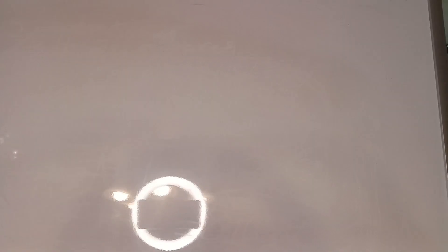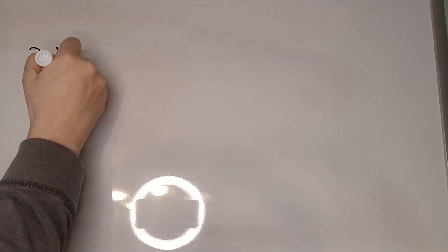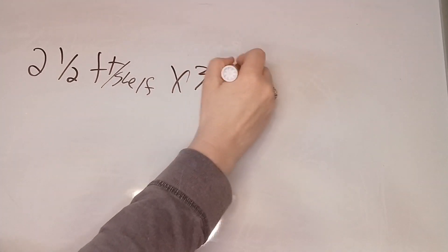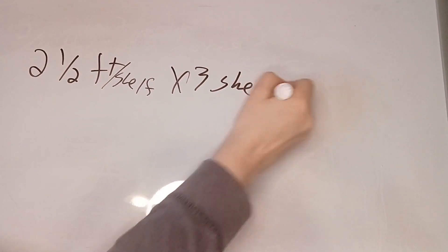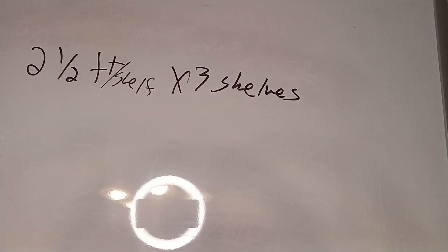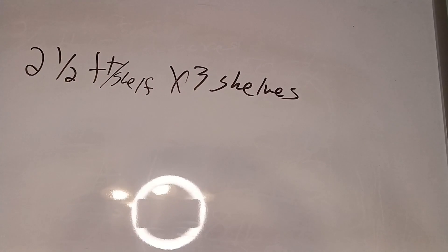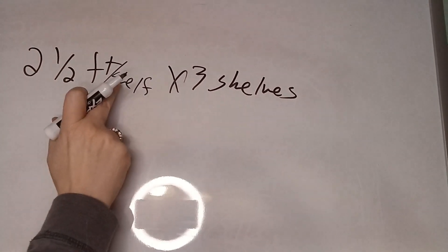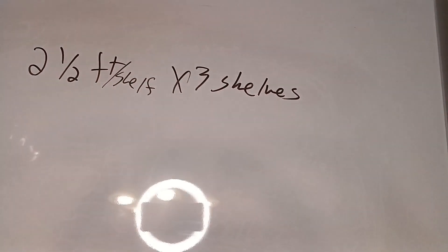Let's look at another example. Say we have a bookshelf and it is two and a half feet long. And there are three shelves on that bookcase. All right, and we want to know how much wood we need to build these. So we're going to multiply so that those shelves cancel.